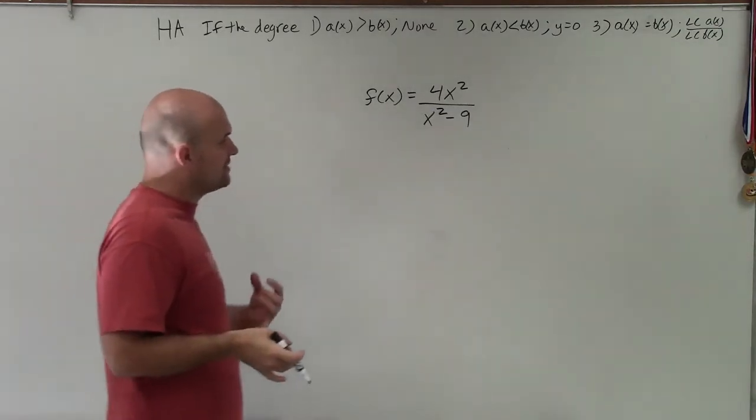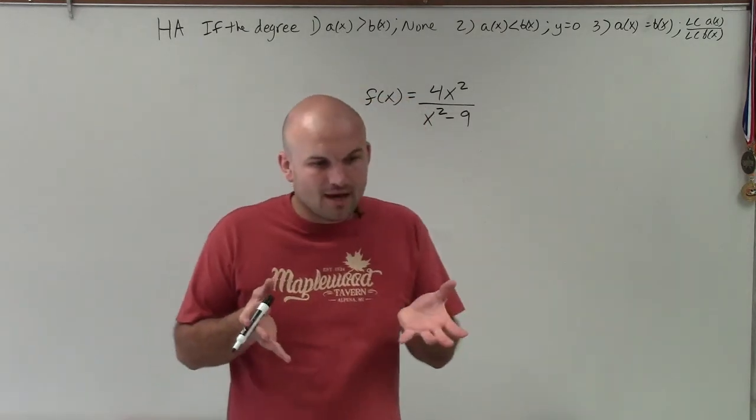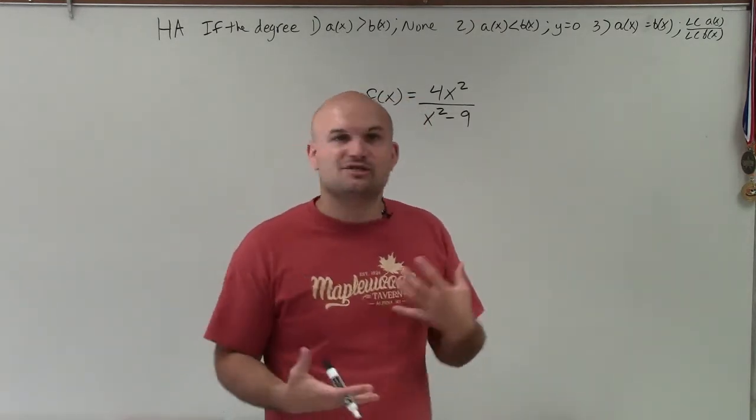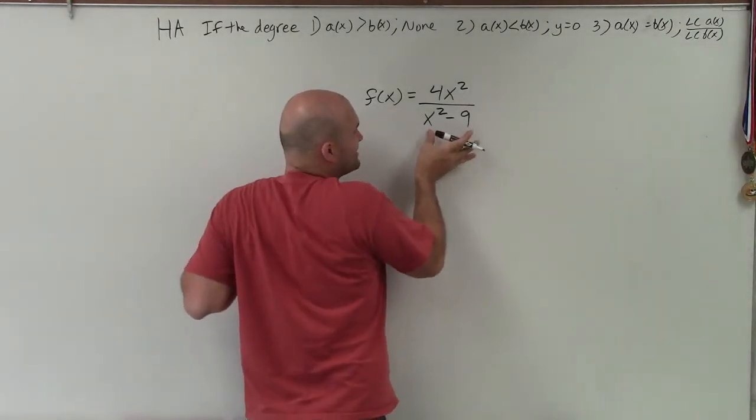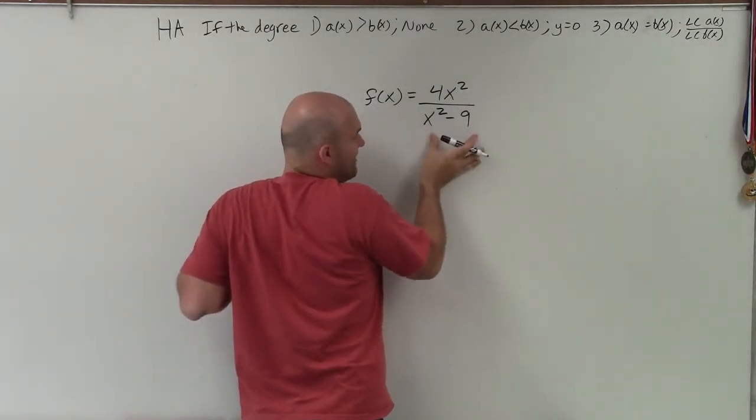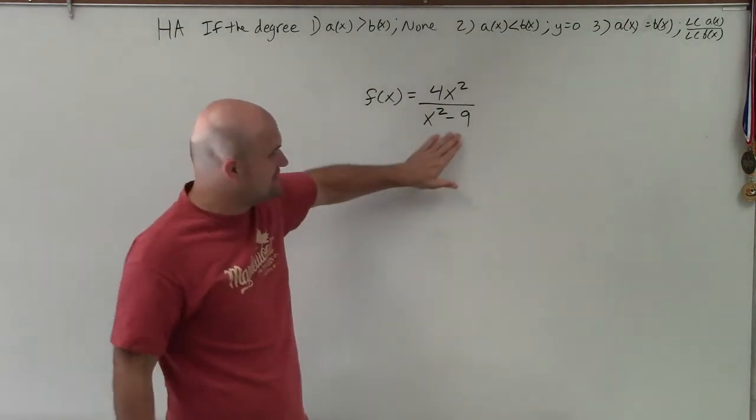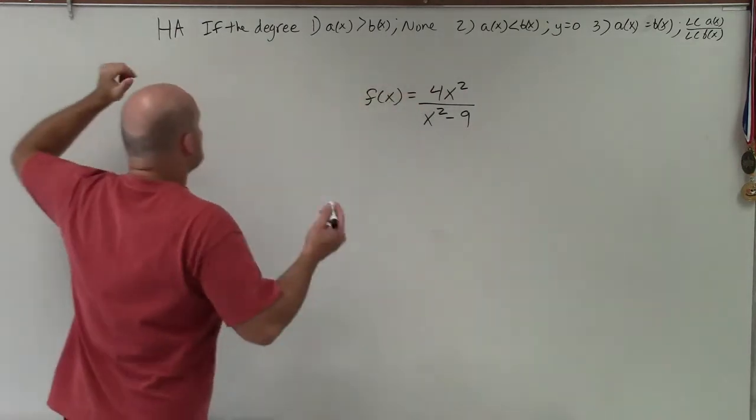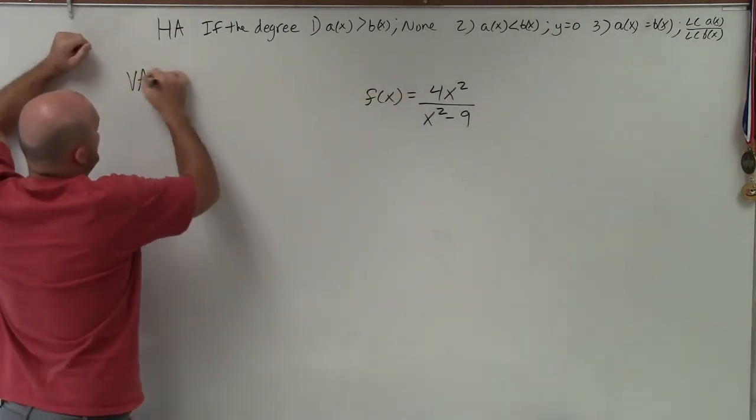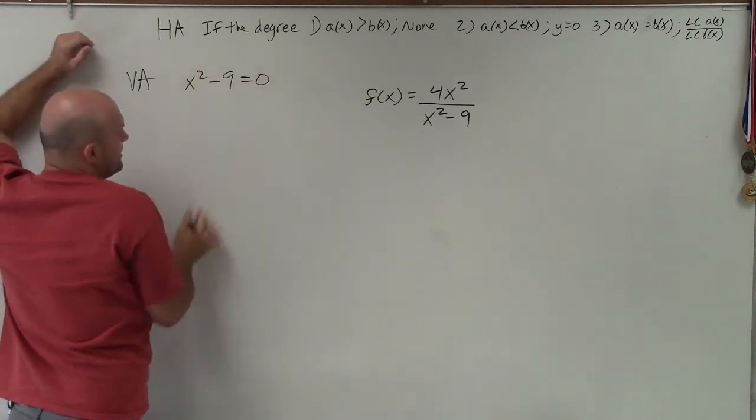So I always like to start with the vertical asymptotes because I think that's the easiest way to get started. Now, remember, the vertical asymptotes are simply going to be the values where our denominator equals 0. Because when our denominator is equal to 0, our function is undefined, creating our asymptote. So to find our vertical asymptotes, all we simply need to do is take whatever's in our denominator and set it equal to 0.